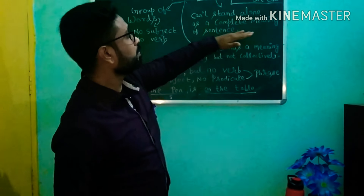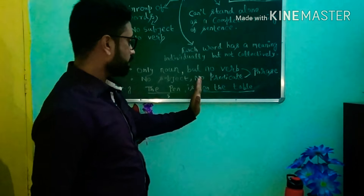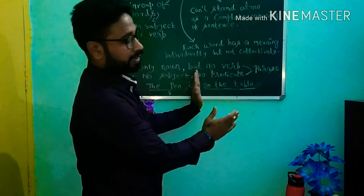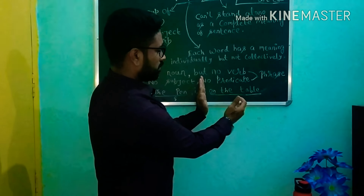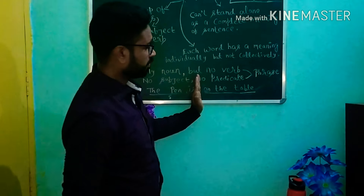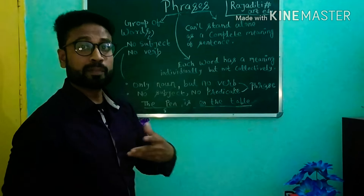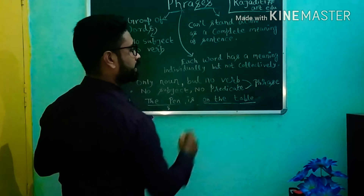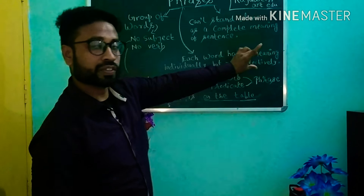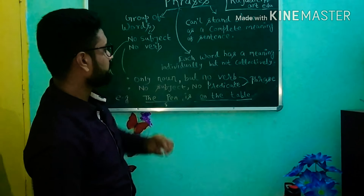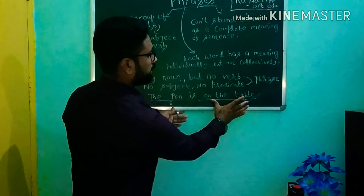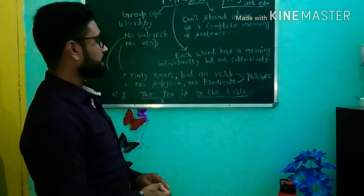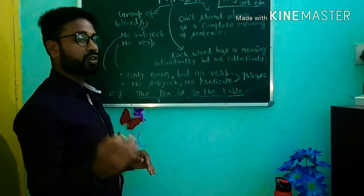A phrase can't stand alone as a complete meaning of a sentence. If we separate 'the pen is' and 'on the table,' the phrase 'on the table' will not have a complete meaning. This definition of phrases is very clear by going through the example of 'on the table' in the sentence 'The pen is on the table.'